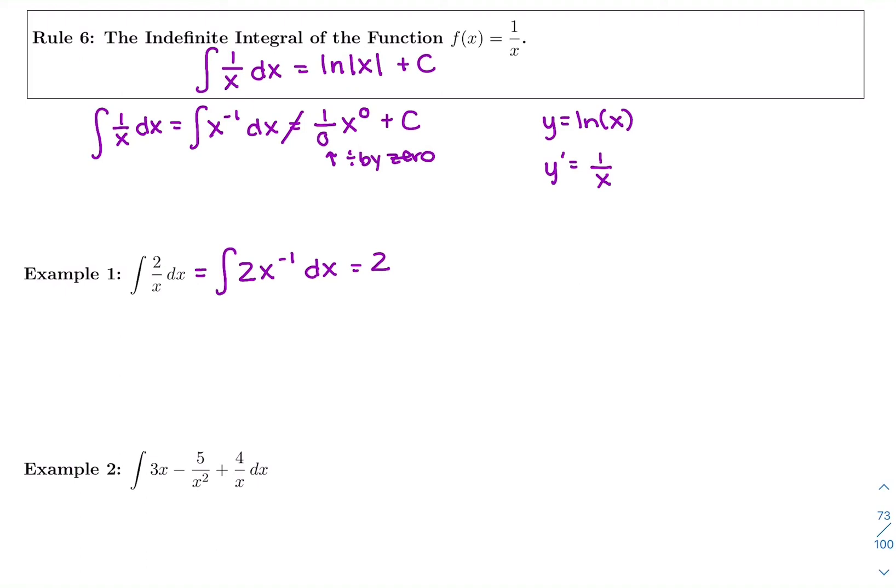I would pause and say, if I get 0, that's the only time we do not use that rule. Instead, we say 2 ln of x plus c. We cannot do 2 over 0, x to the 0. Cannot divide by 0. So it's not our answer. Anytime you get 0, it's really ln of x.